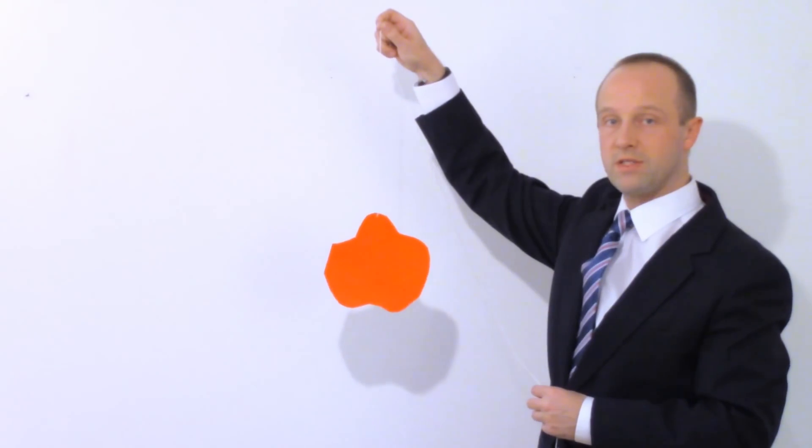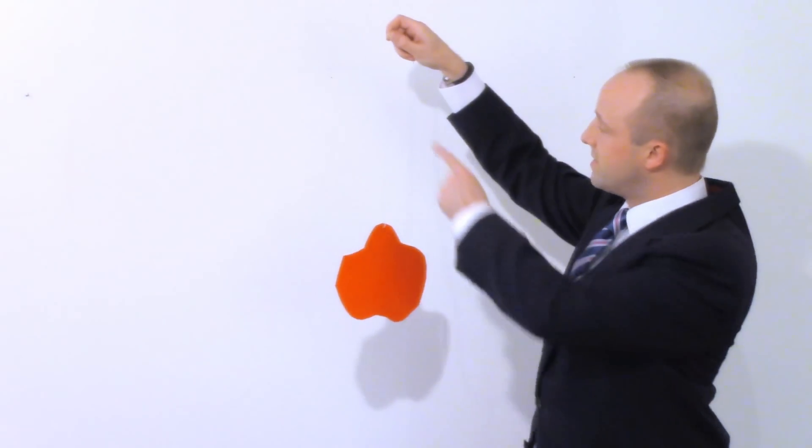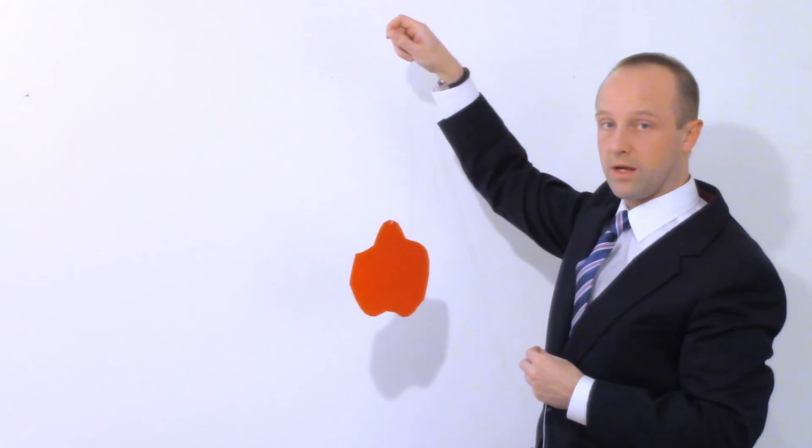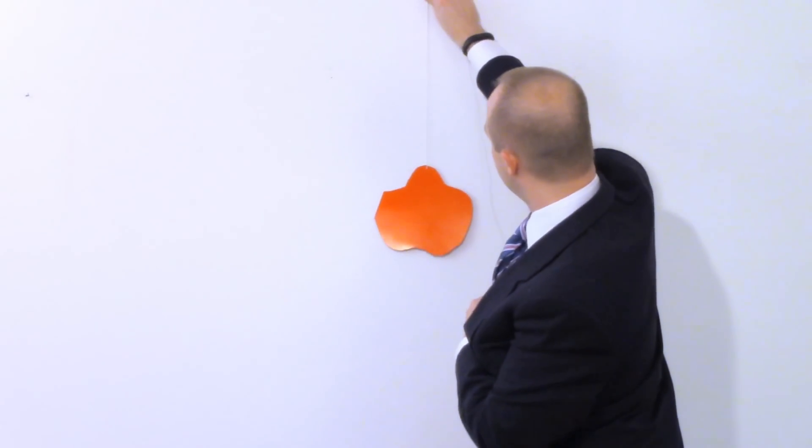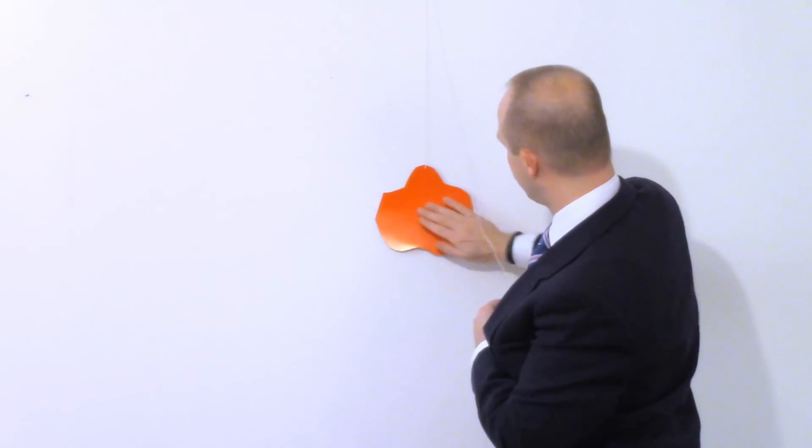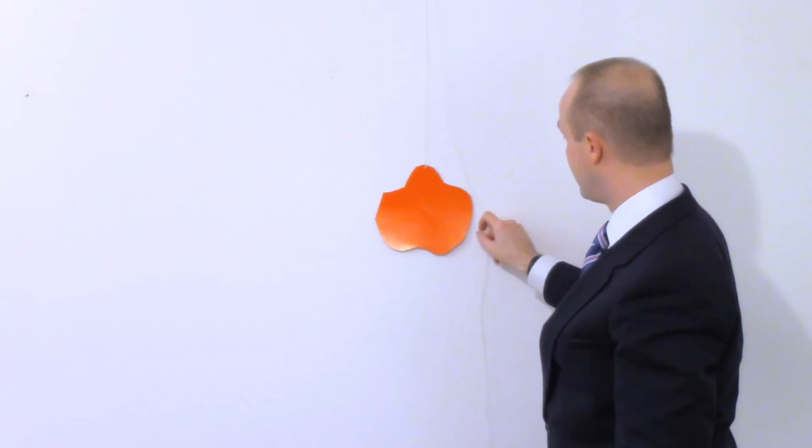With my shape able to hang freely, I know its centre of mass must be somewhere directly below this piece of string. Let me just fix this in place. And what I'm going to do next is add a line to this.